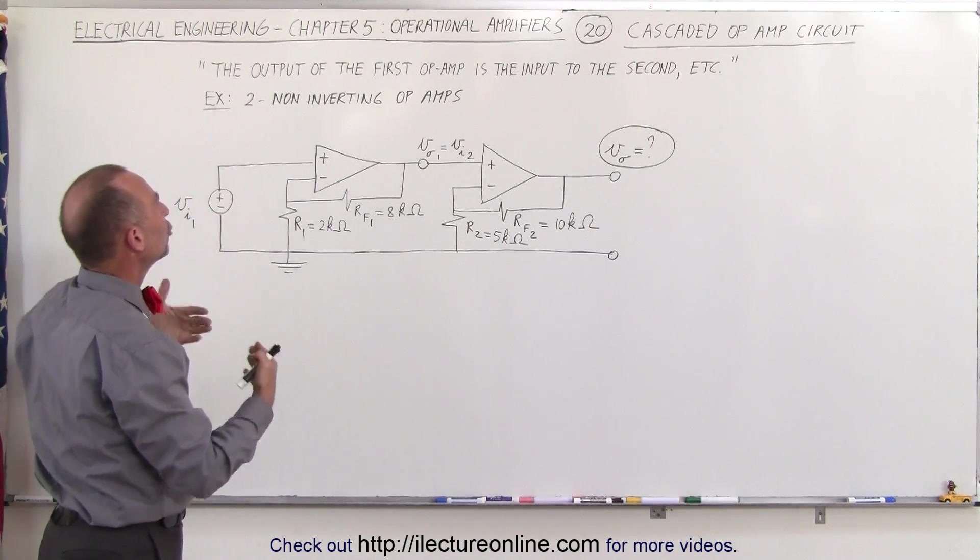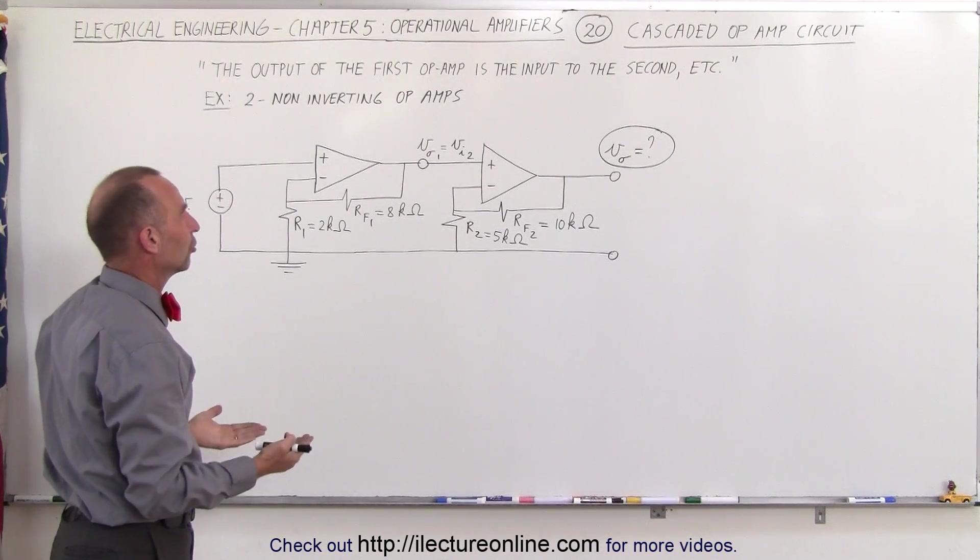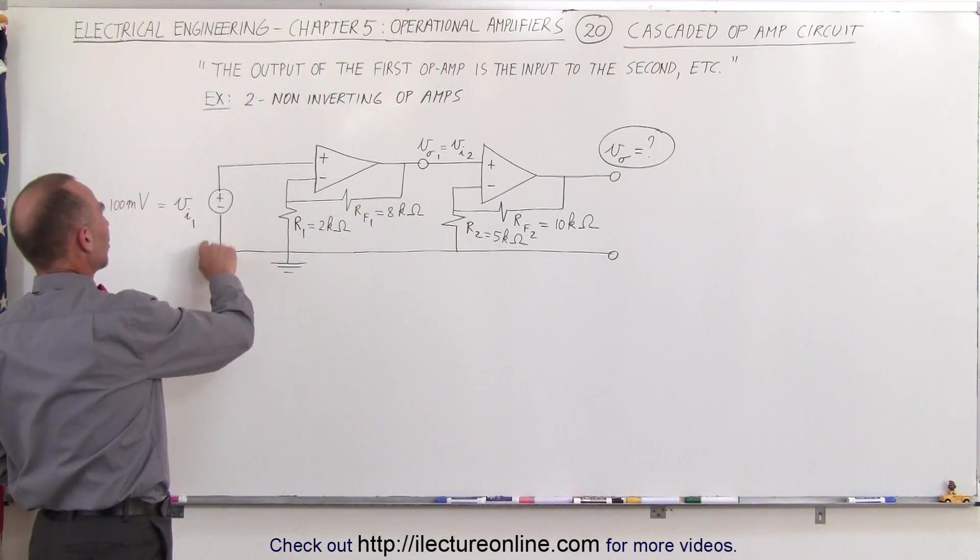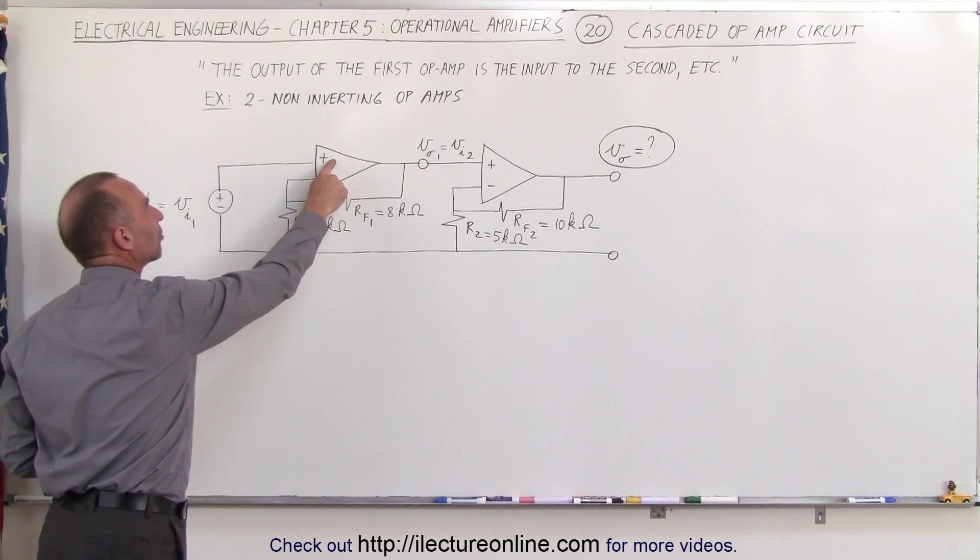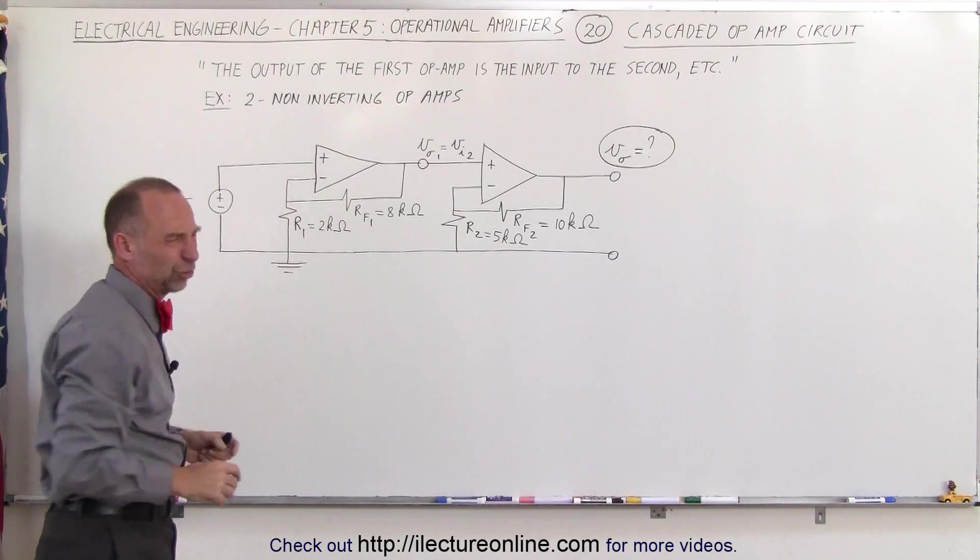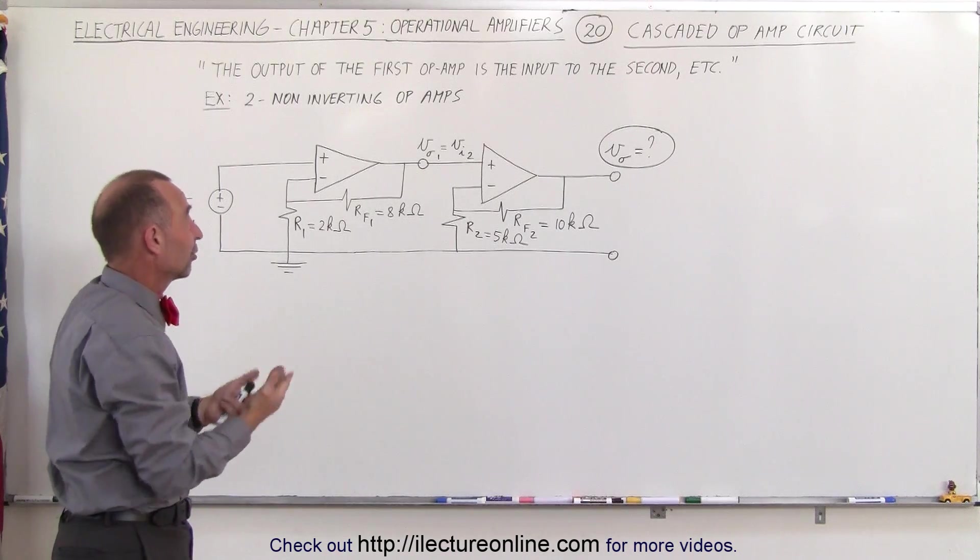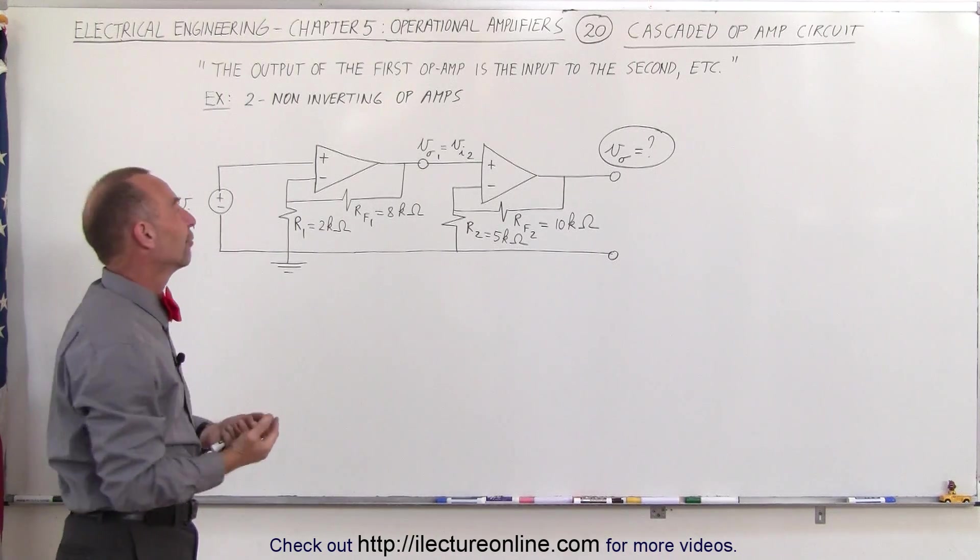In this example, we're going to use two non-inverting op-amp connections. Here you can see that the voltage input of the first operational amplifier is on the non-inverting terminal. I shouldn't really say positive terminal because there's a plus sign there. It's called the non-inverting terminal.